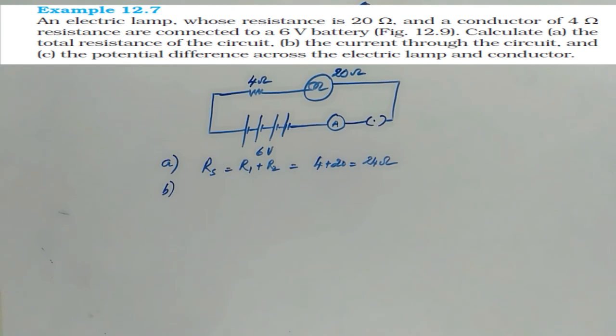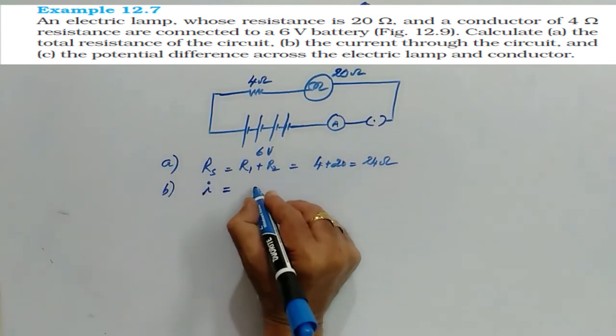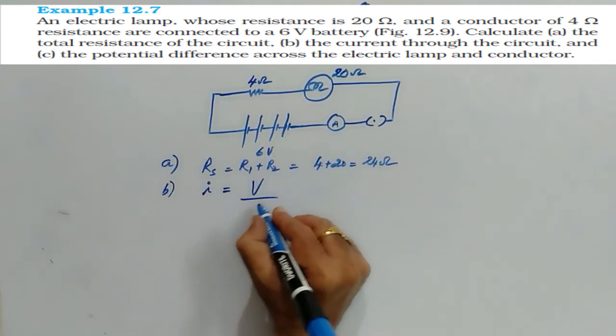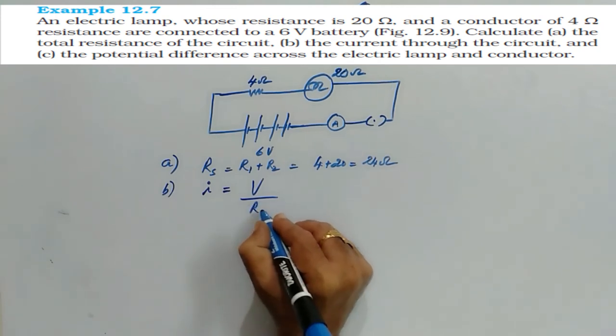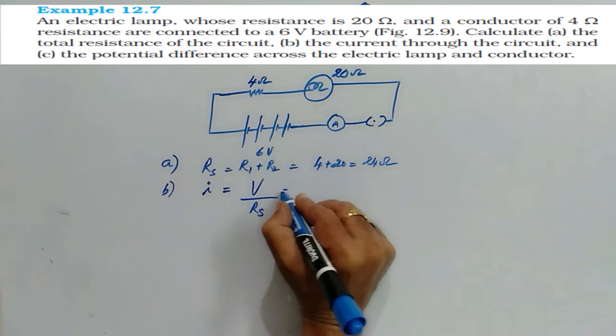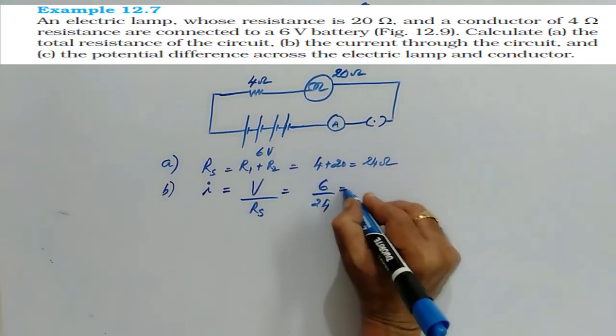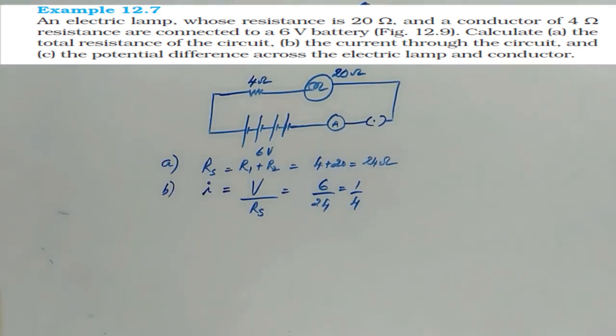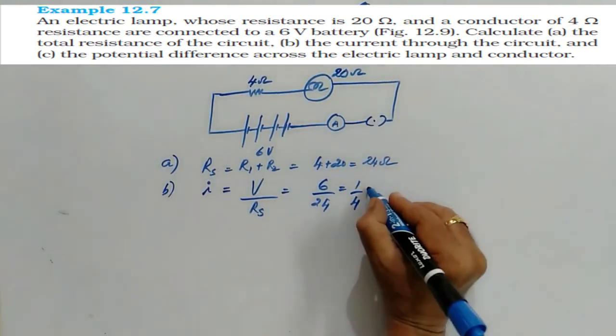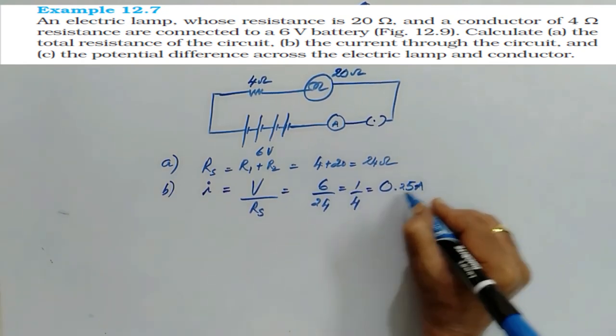The second bit was asked, the current through the circuit. Good. So I is asked, net current is always equal to net potential difference by net resistance. Therefore 6 by 24, which gives 1 by 4, or if we simplify it, 0.25 ampere.